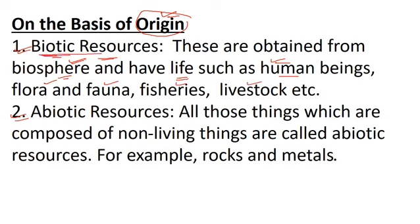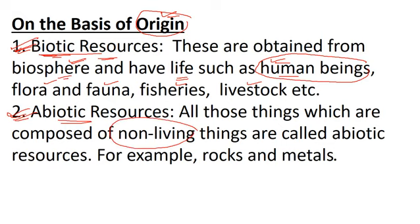Human beings are also a part of biotic resources. After this, we have abiotic resources. Abiotic resources are those resources which are composed of non-living things — things which are not living. For example, rocks and metals.